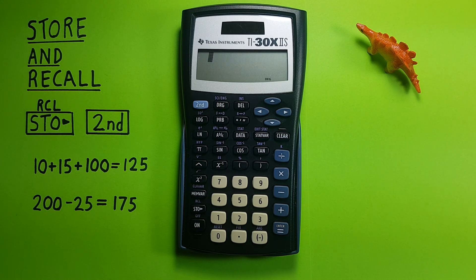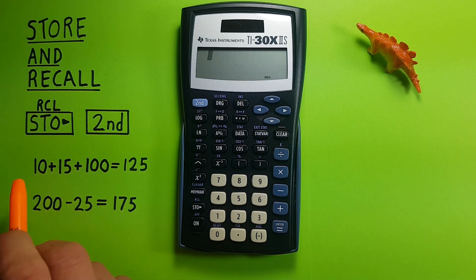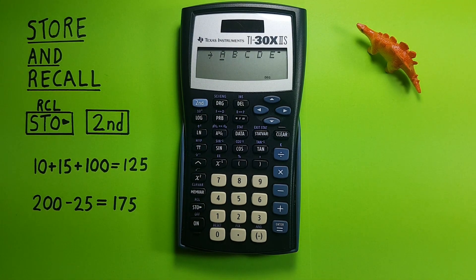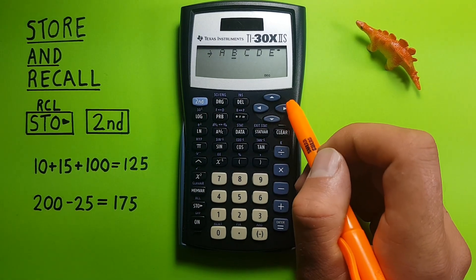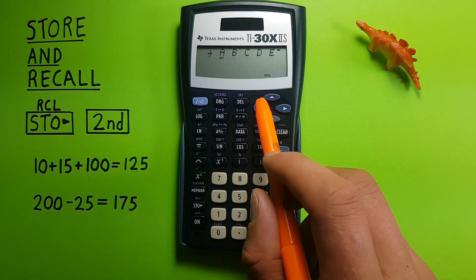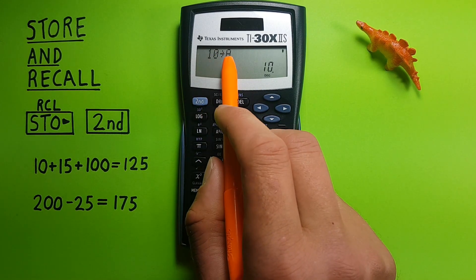This calculator has five storage slots for data. If we want to start storing values, let's store 10 initially. We put 10 on the screen and then press the STO key, which is short for store. This brings up our five storage slots: A, B, C, D, and E. Let's put our 10 in A, so we highlight A and hit enter. We see 10 going into A.